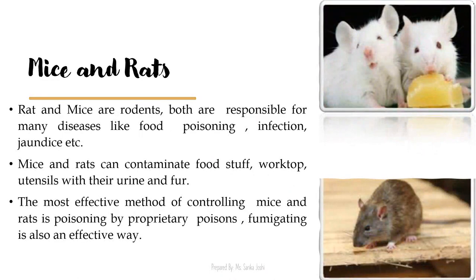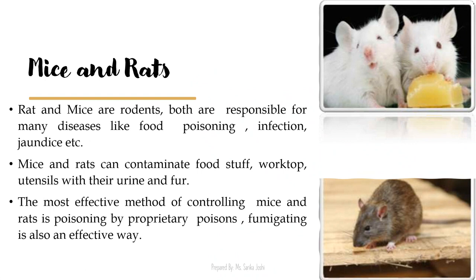Mice and rats are rodents responsible for many diseases like food poisoning, infection and jaundice. In hospitality organizations, rats and mice are typically found at the time of material delivery and in stores. They can contaminate foodstuff, worktops and utensils with their urine and fur, which is very dangerous for health. The most effective method of controlling them is poisoning with rat poison available in the market, or fumigation. Traps can also be used to catch mice and rats.